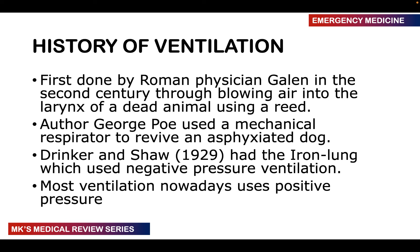Drinker and Shaw invented the iron lung — a chamber where once a patient is placed up to the neck, a vacuum creates a negative pressure inside. This causes the chest wall and lungs to expand, reducing airway pressure so air flows into the lungs. This is called negative pressure ventilation. It's not practical because it's cumbersome and expensive to build.